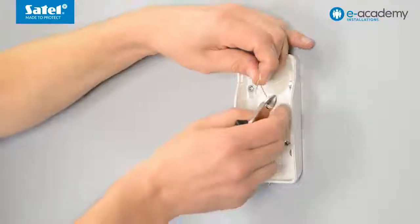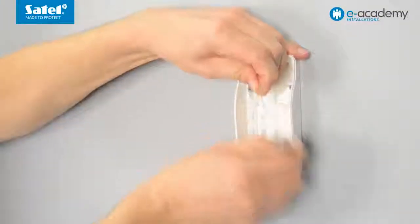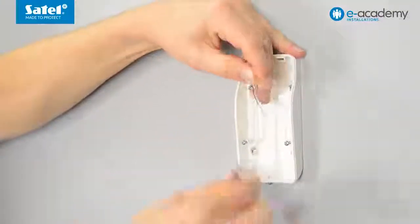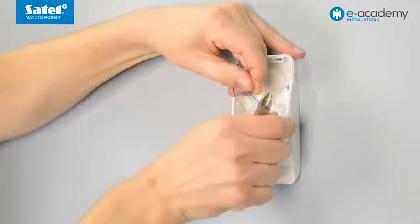Strip about one centimeter of wire insulation from the ends of all eight wires to make them ready for connecting to the electronics board.